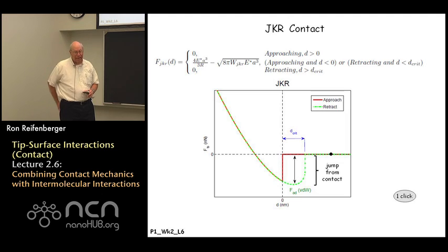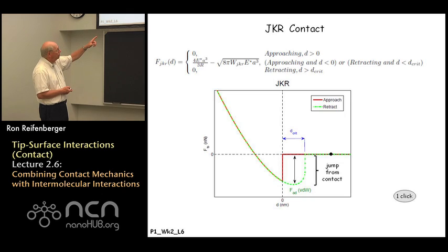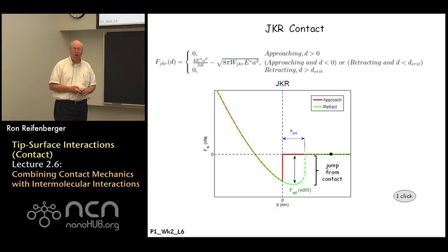In the case of the JKR contact situation it's a little bit more complicated because the predictions of JKR are very hysteretic because of these interaction forces between the tip and the substrate over the area of contact. You can form adhesive bonds between atoms and molecules in the tip and atoms and molecules in the substrate. These adhesive bonds have to be broken as the tip is pulled away from the substrate and you get a very hysteretic curve.